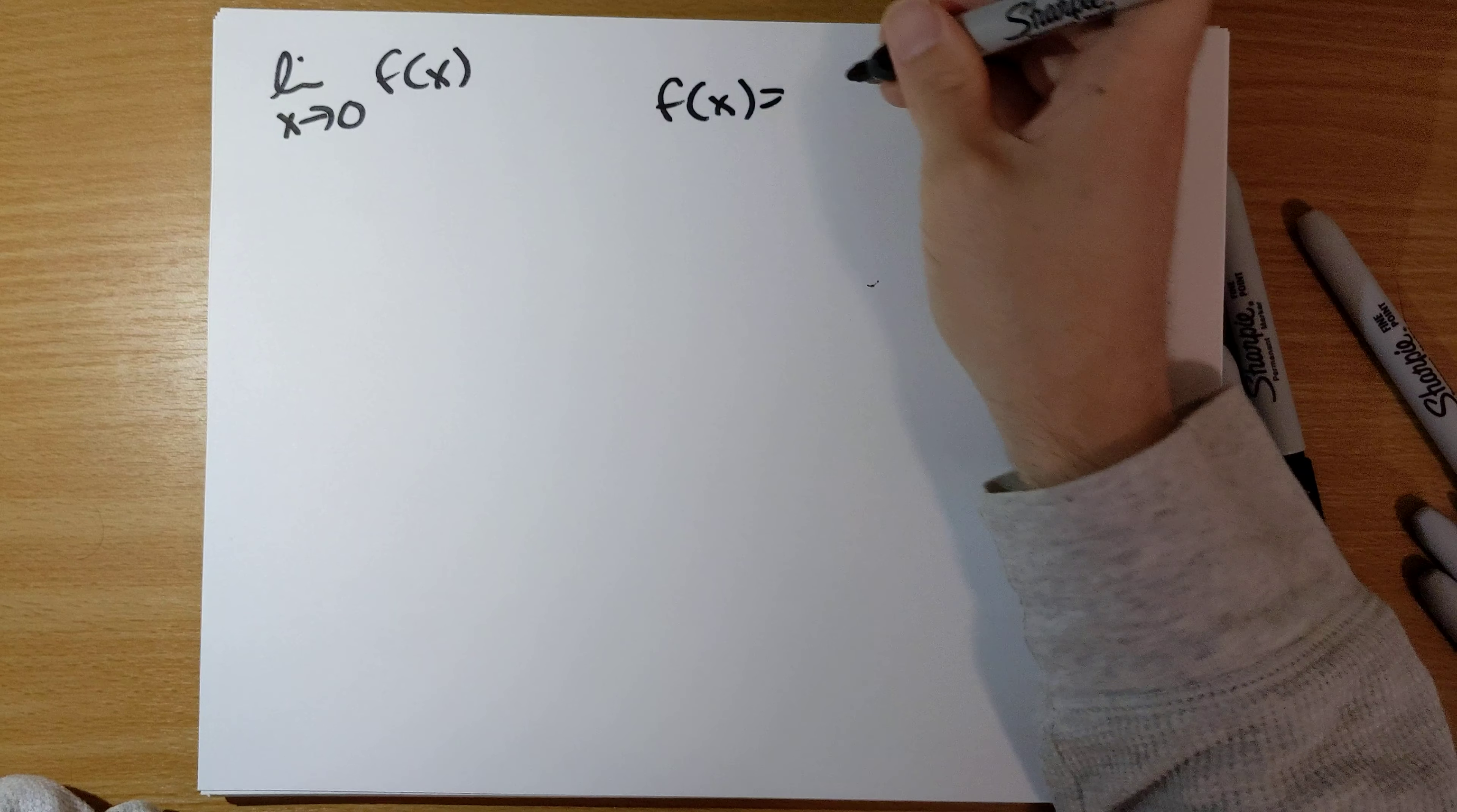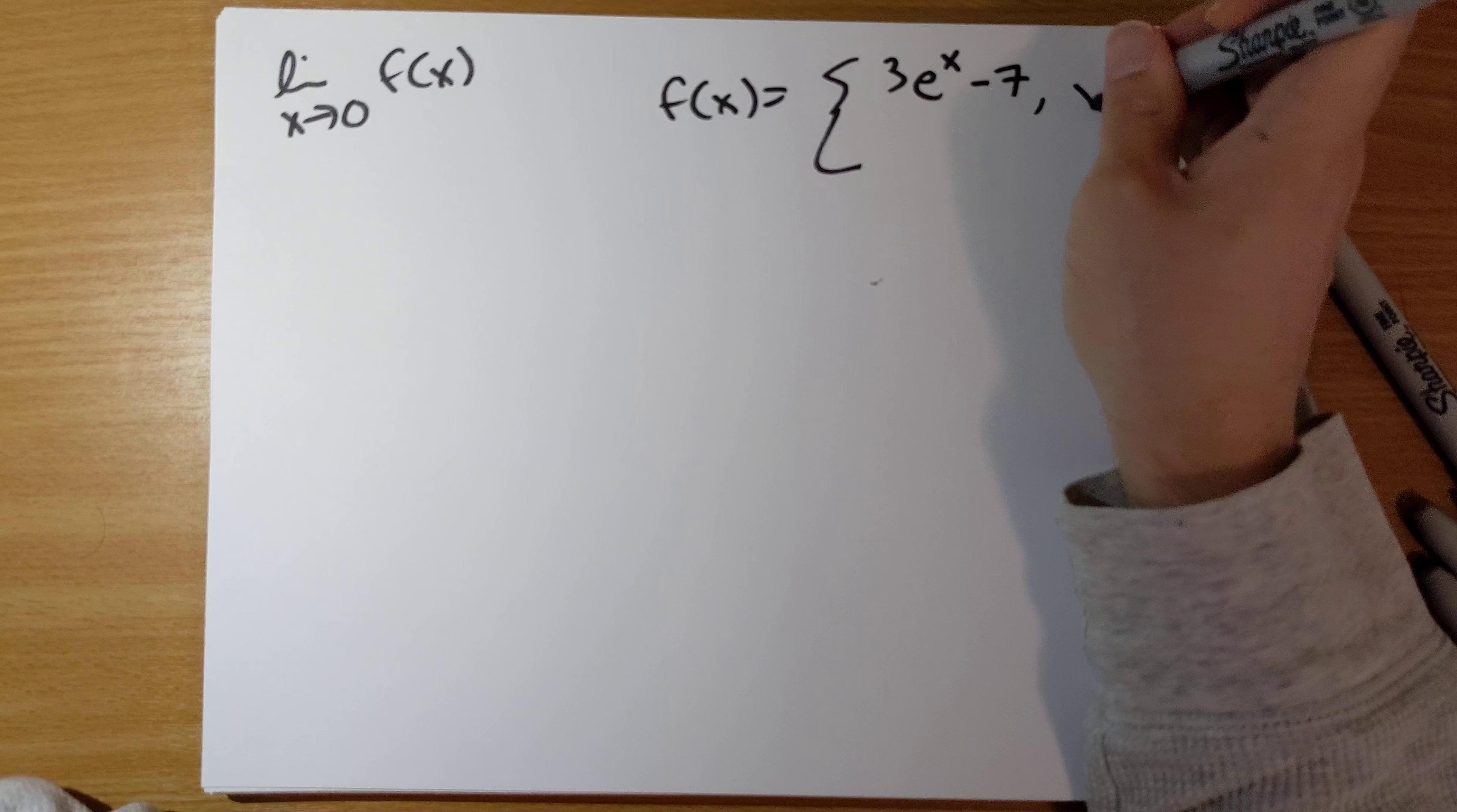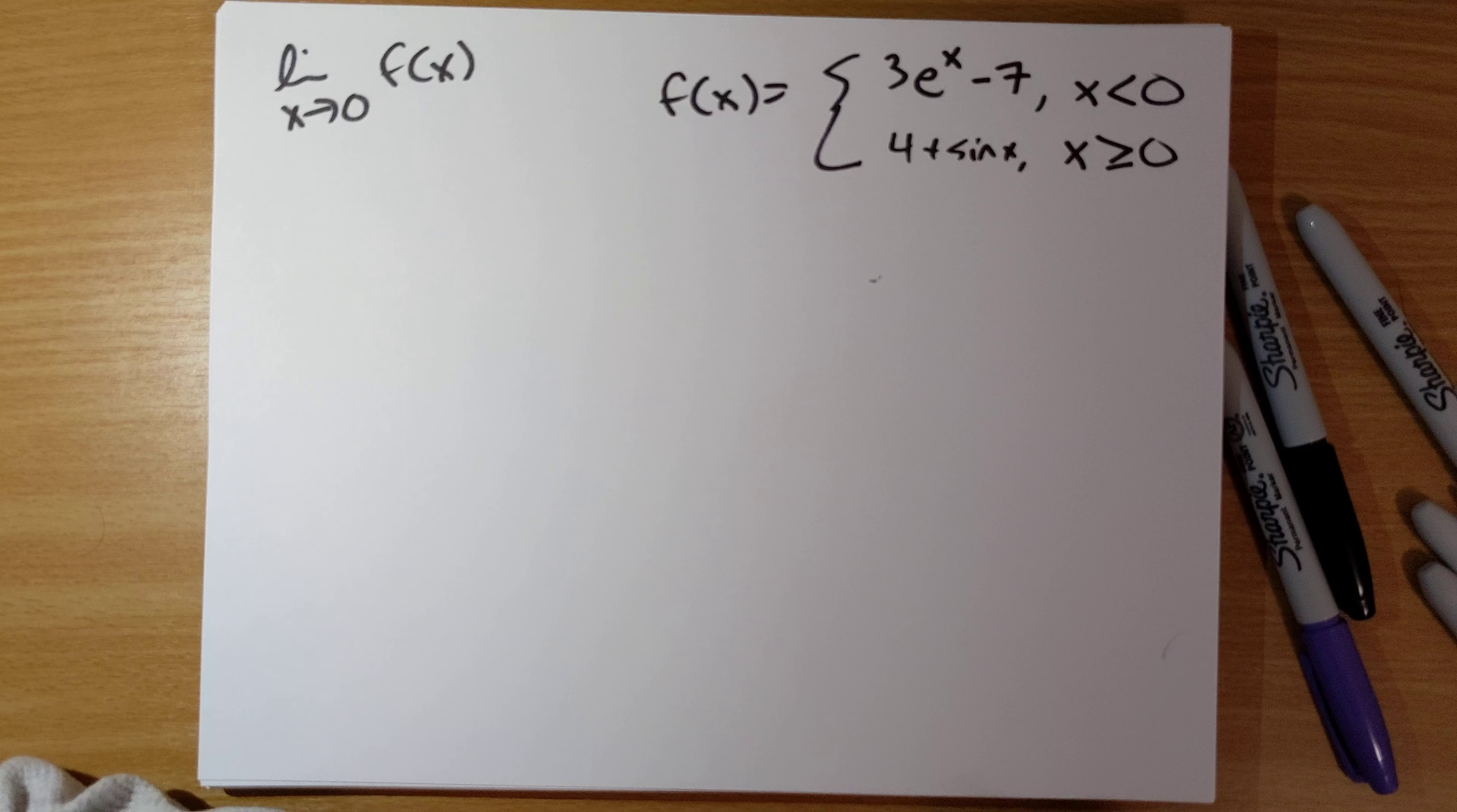where f of x is piecewise defined as 3e to the x minus 7, where x is negative, and 4 plus sine x, where x is greater than or equal to 0.